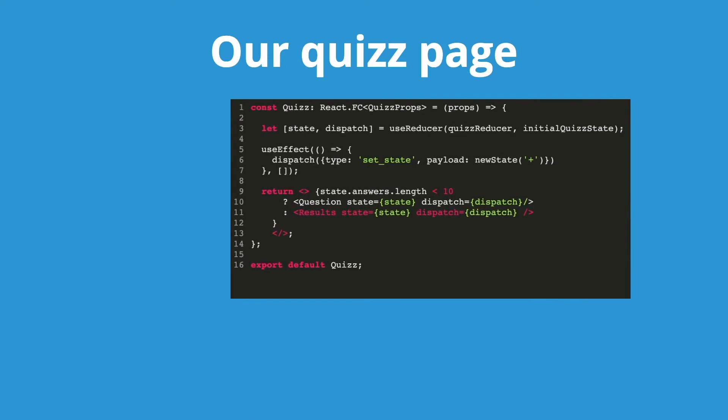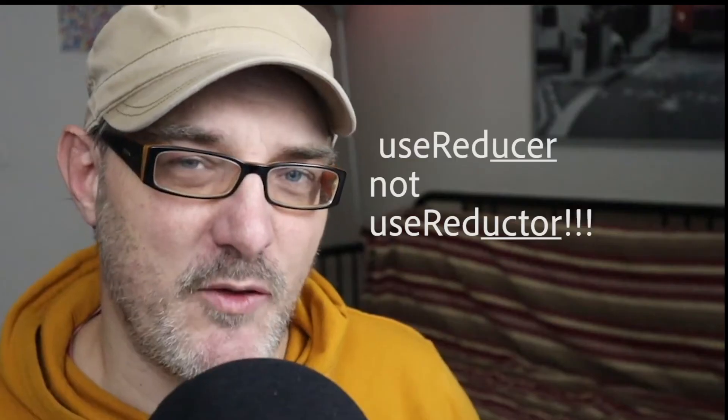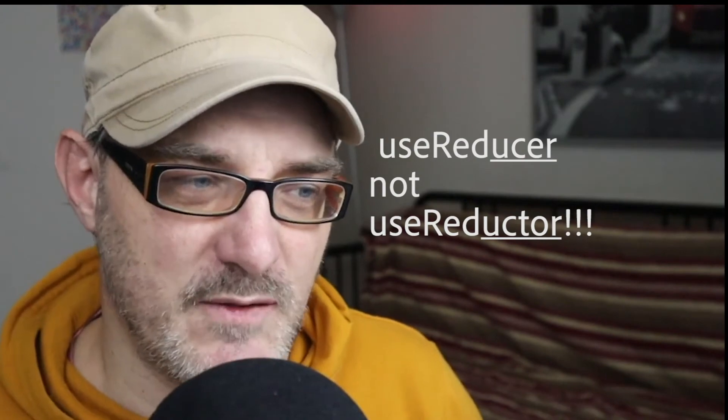Now let's have a look at our quiz page — it's very simple. Our quiz retrieves the state and the dispatch function from the useReducer function.